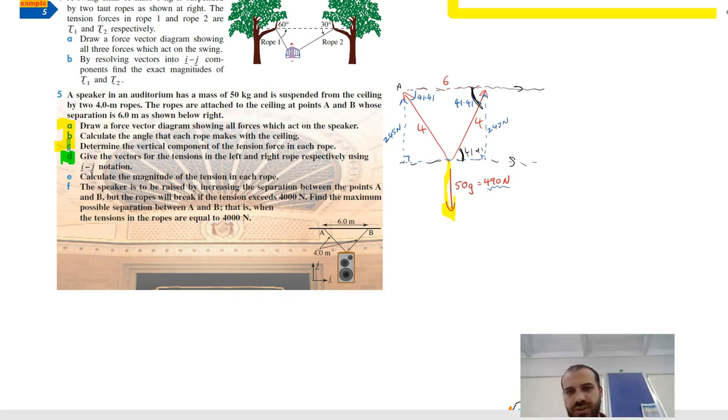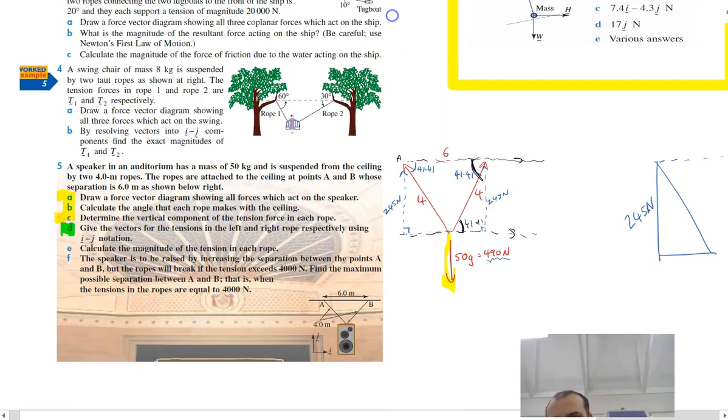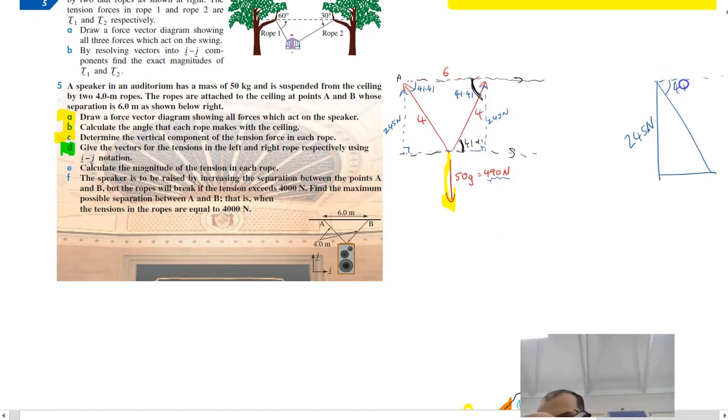The trick here is just to use some basic trig. If I zoom in on this triangle here, I'm just going to redraw it just as a triangle like that with 245 newtons here and an angle there of 41.41. And then the question just ends up being, if there's 245 newtons in the J component, how many newtons in the I component?